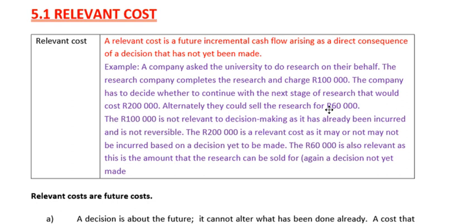Alternatively, they could sell the research for 60,000 rand. Now I know it costs a hundred thousand, but someone is only willing to buy it for 60,000. That would be relevant. We have got two relevant costs to take into account: I can sell it for 60,000, or I can continue researching and spend another two hundred thousand rand. So the hundred thousand is not relevant, but the two hundred and the sixty thousand are both relevant depending on which decision is yet to be made.